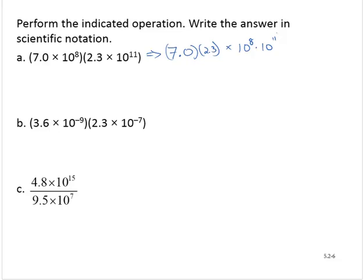Now, 7 times 2.3 is 16.1, and I'd have times 10 to the 19th. 8 plus 11 yielding 19.